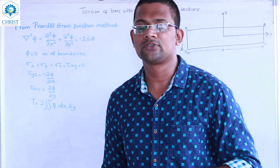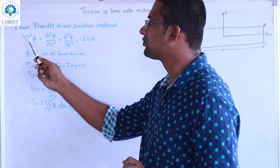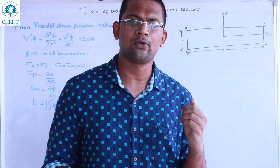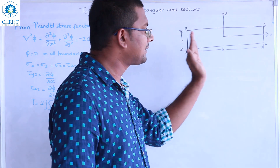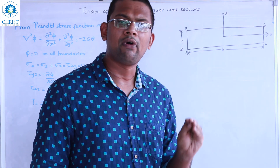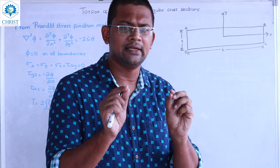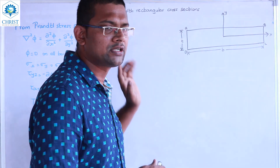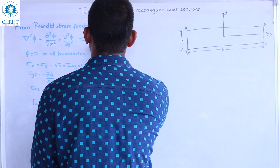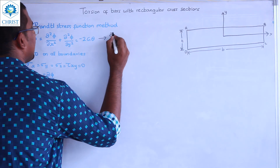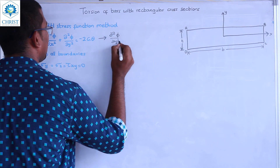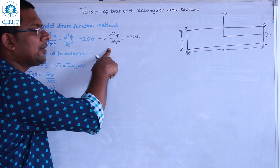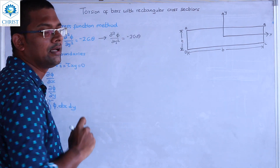For a thin rectangular section, it will also be solved. The other important expression is d²φ/dx² + d²φ/dy² equals minus 2Gθ. This is the function of x and y, but in the thin rectangular case, φ is independent of x. So the x terms cancel out, and the equation reduces to d²φ/dy² equals minus 2Gθ.